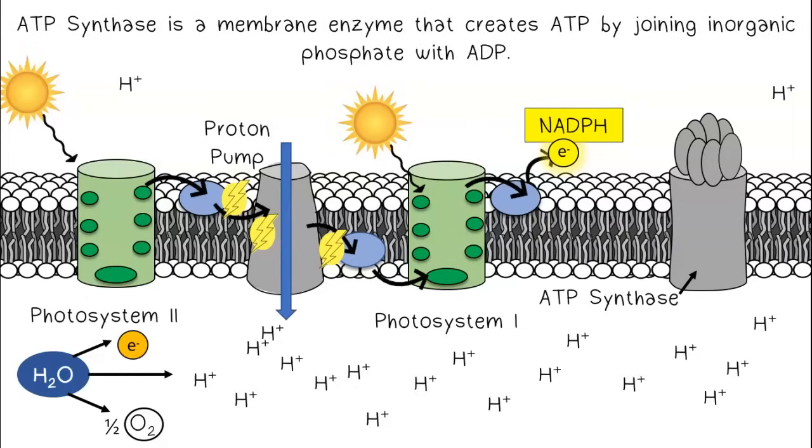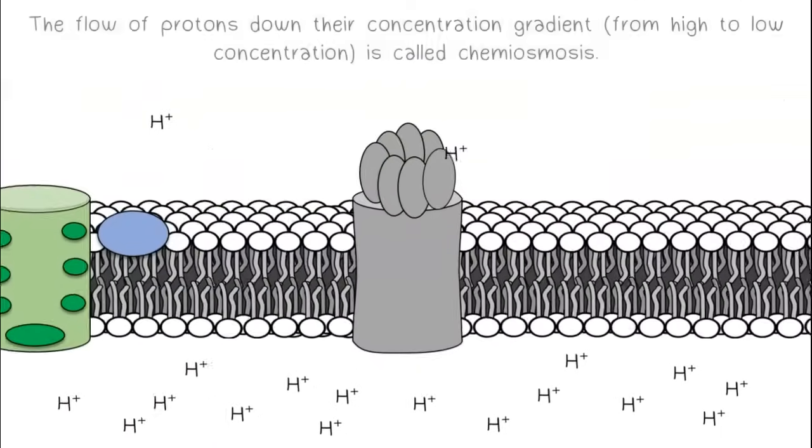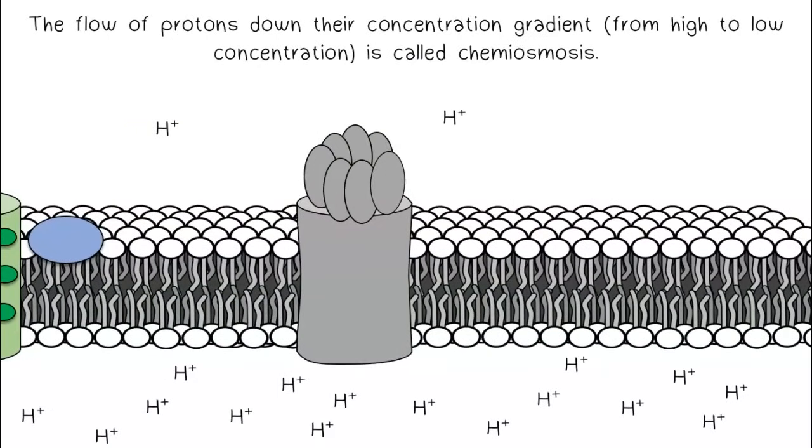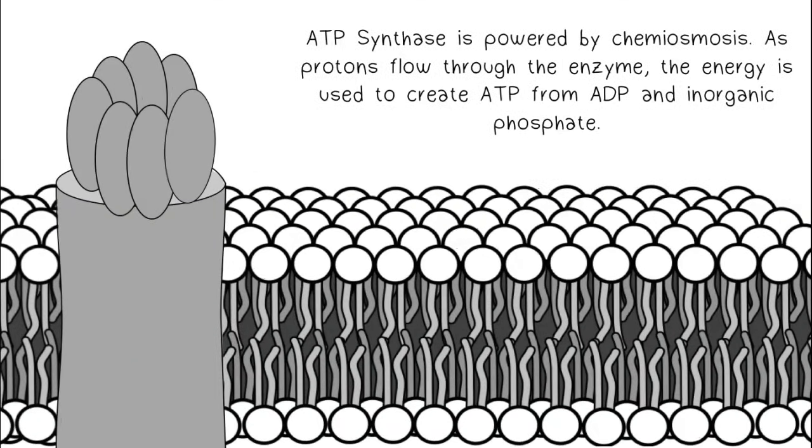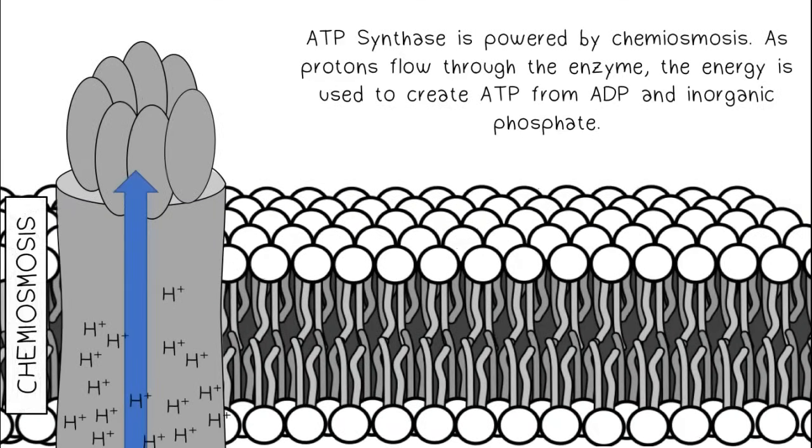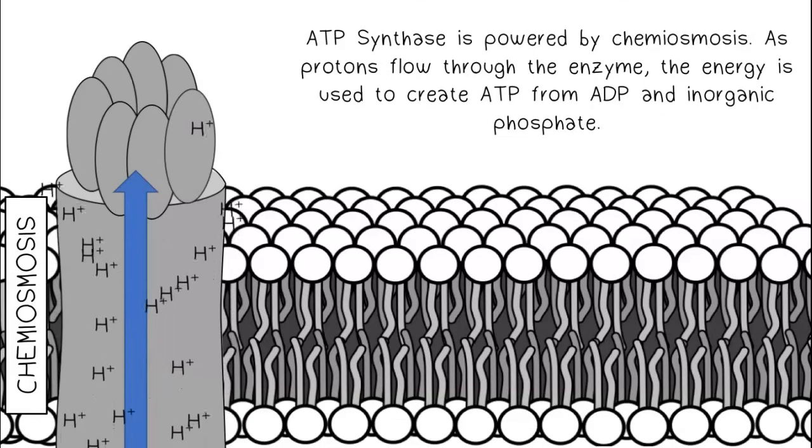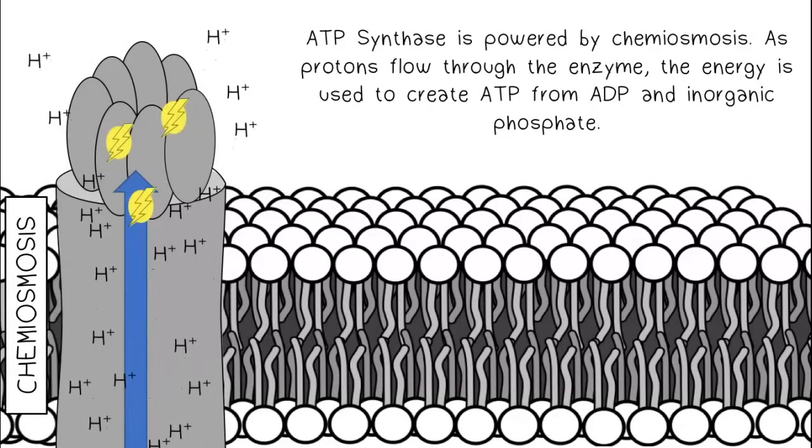ATP synthase is a membrane enzyme that creates ATP by joining inorganic phosphate with ADP. The flow of protons down their concentration gradient from high to low concentration is called chemiosmosis. ATP synthase is powered by chemiosmosis. As protons flow through the enzyme, the energy is used to create ATP from ADP and inorganic phosphate.